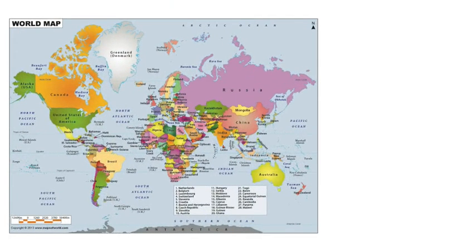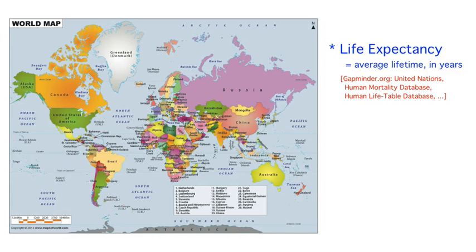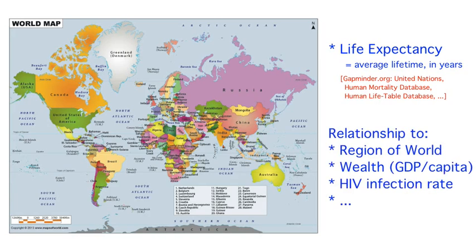Another source of data will be facts and figures for different countries and territories around the world. For example, we will consider the life expectancy for each country — the average number of years a newborn child would live if current mortality patterns were to stay the same. These data were assembled by gapminder.org, using sources such as the United Nations, the Human Mortality Database, and the Human Life Table Database. Life expectancy serves as an excellent measure of a country's overall health and well-being, and we will investigate how it relates to factors like geographic region, GDP per capita, HIV prevalence, and so on.